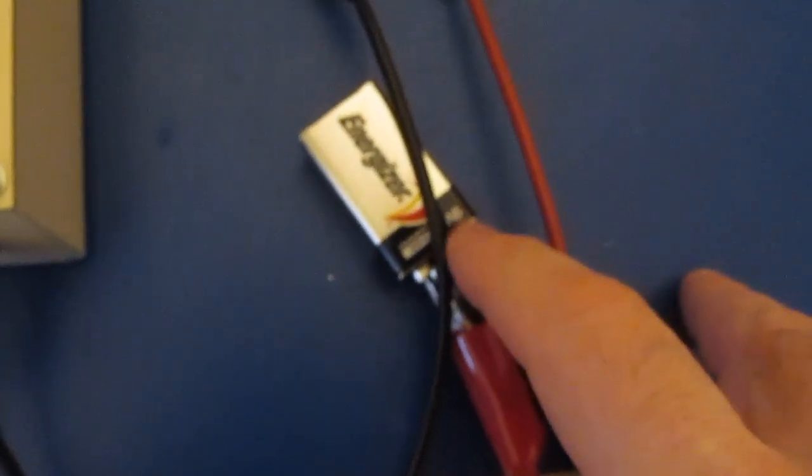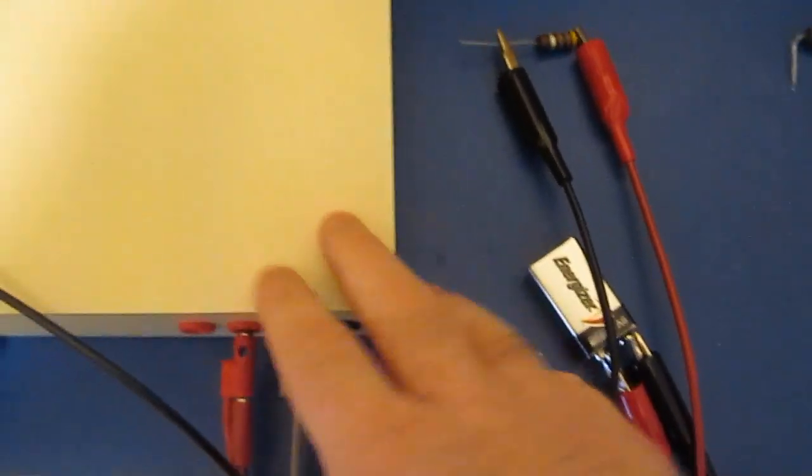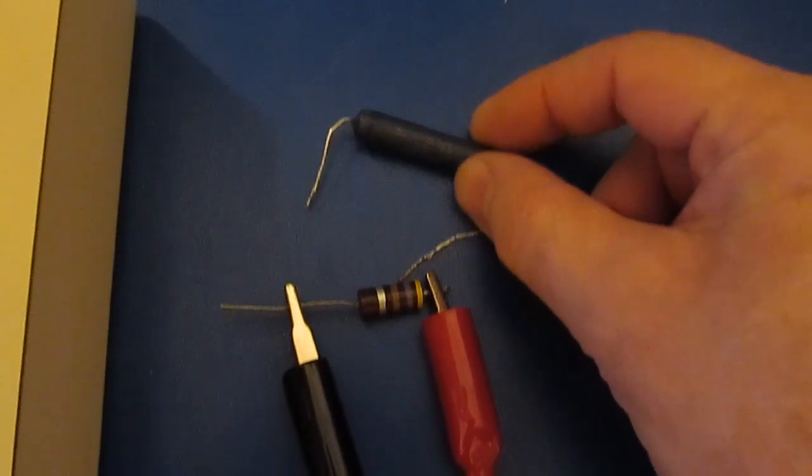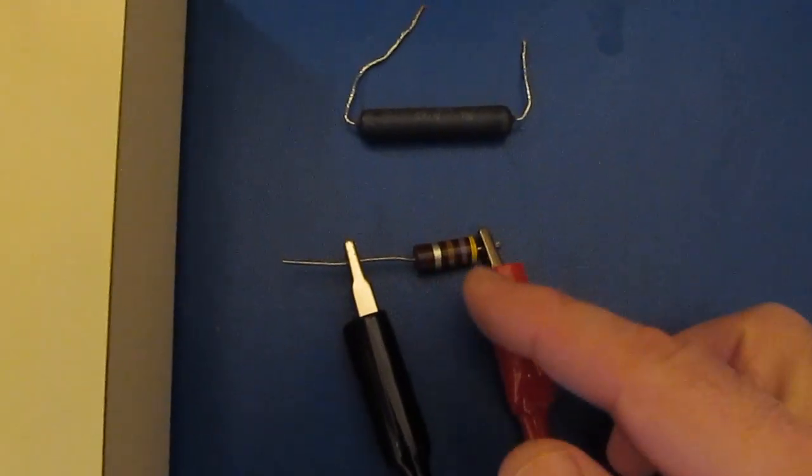This is an Energizer 9-volt battery. It came out of one of our smoke detectors. It's my test jig, so I've had a constant resistance load attached to this meter for quite some time.